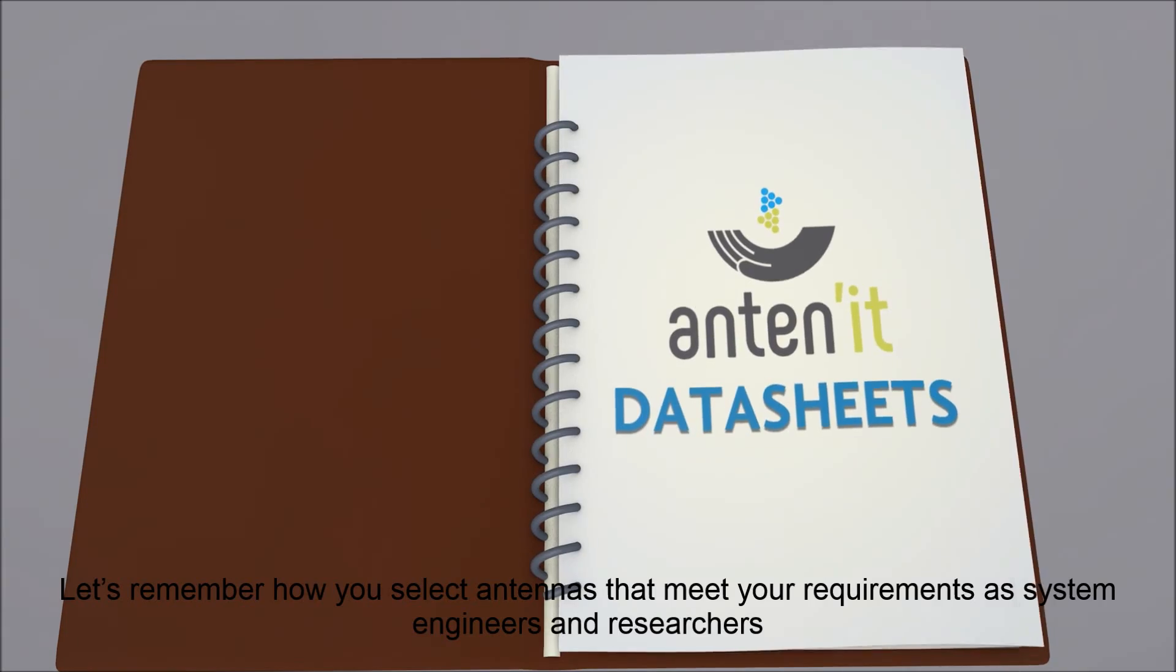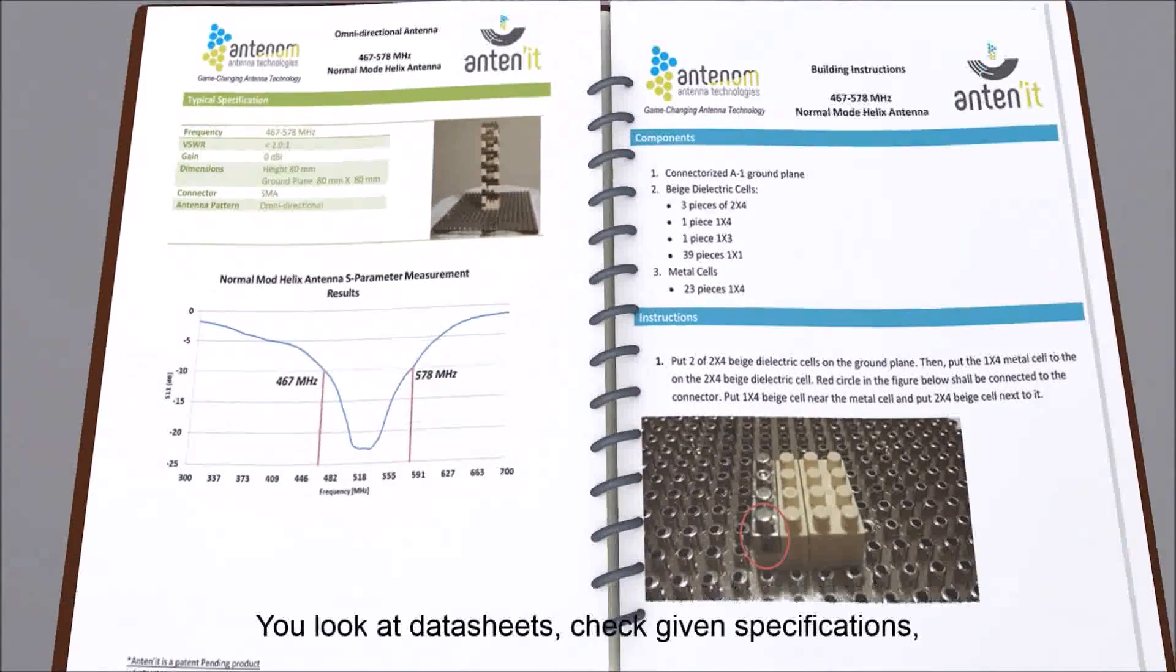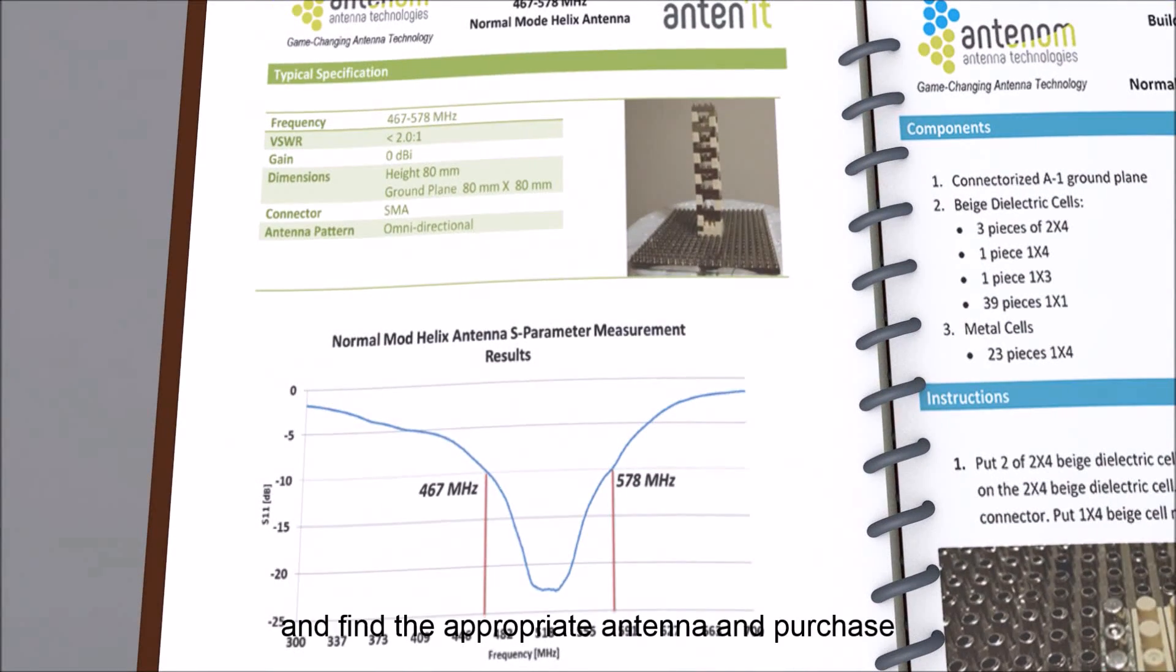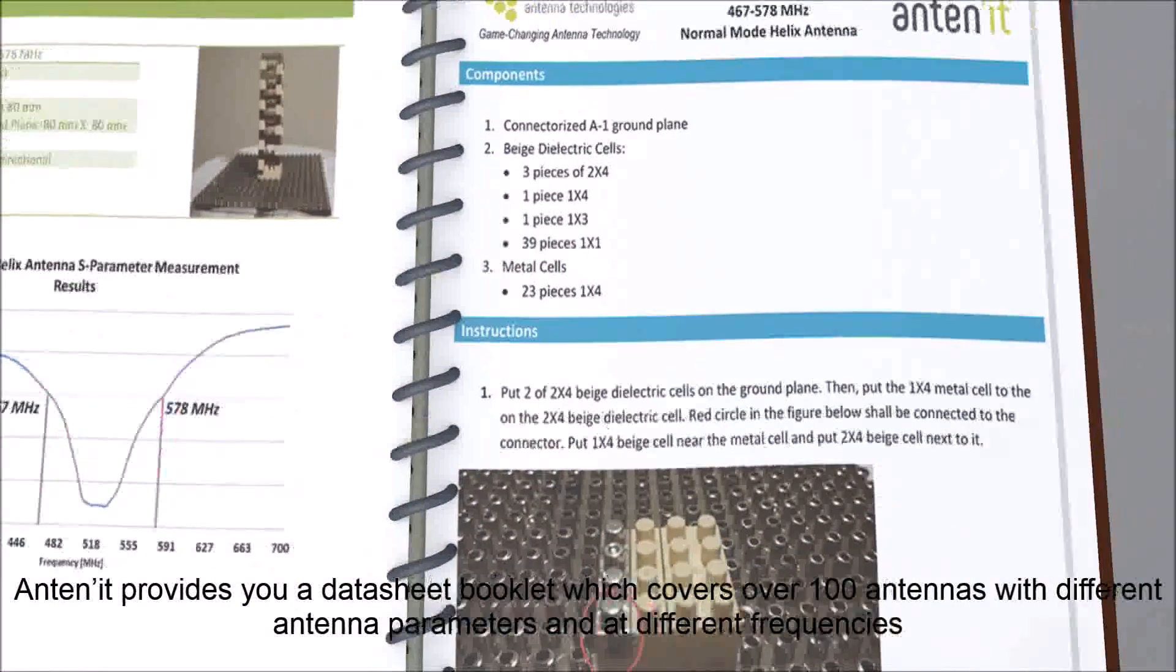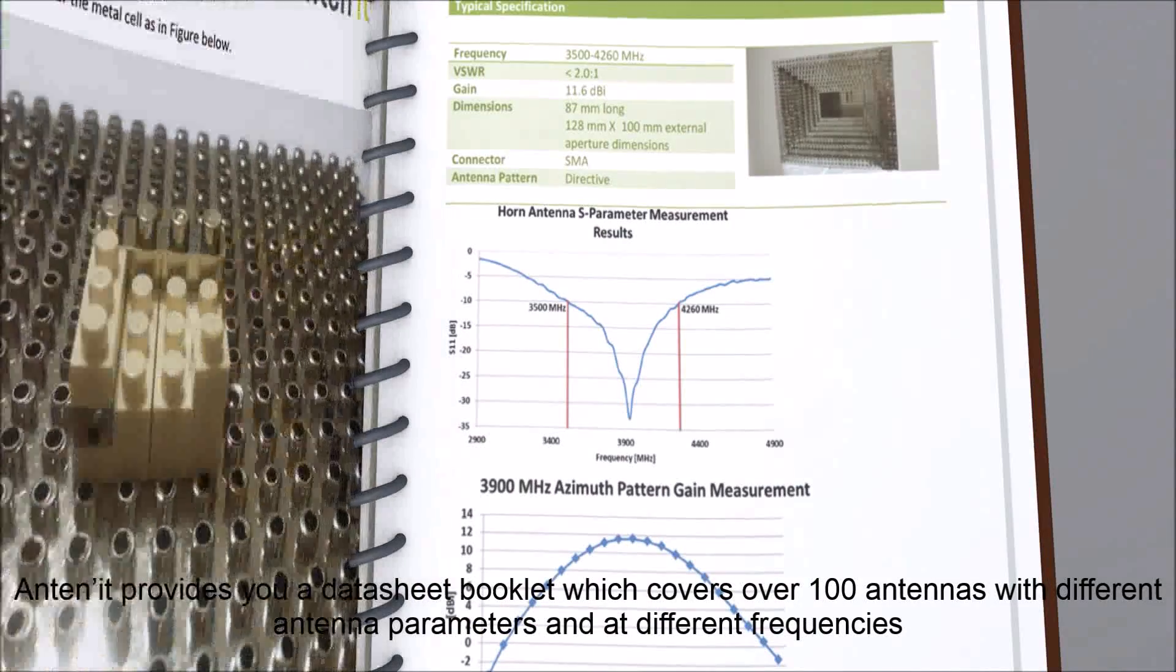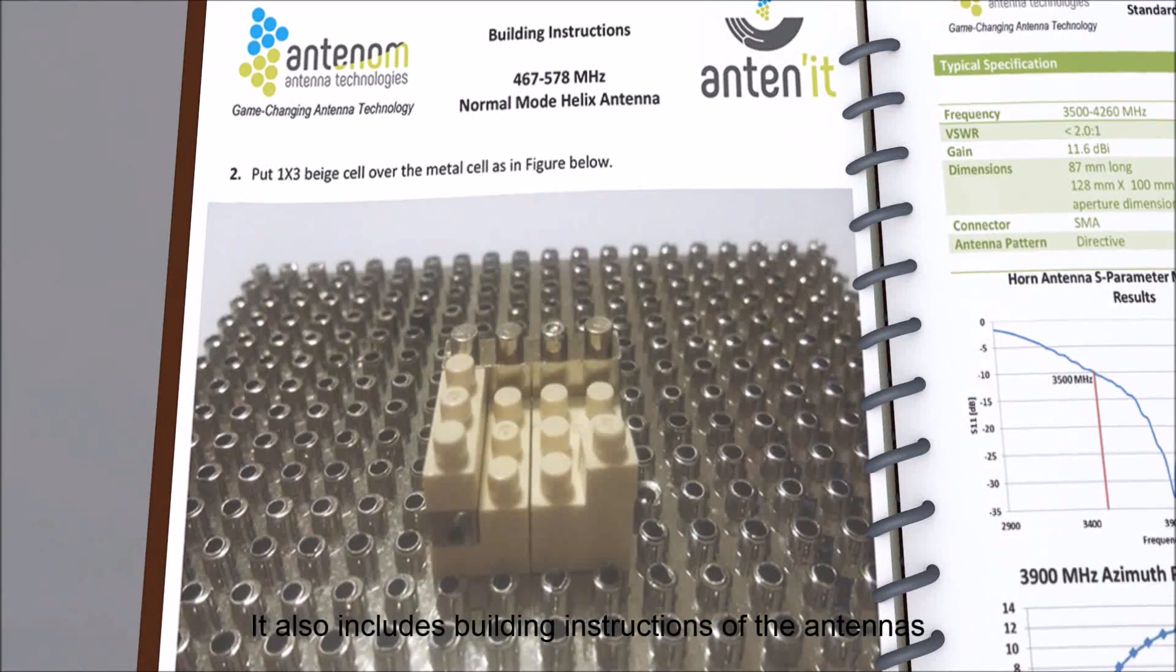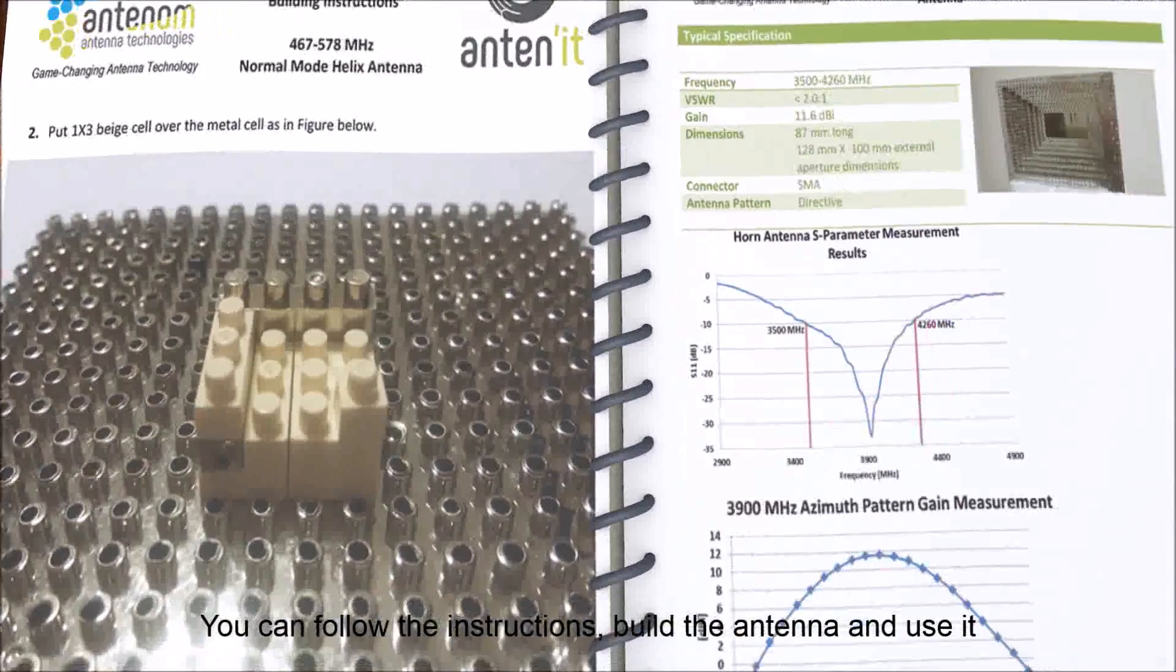Let's remember how you select antennas that meet your requirements as system engineers and researchers. You look at data sheets, check given specifications, and find the appropriate antenna and purchase. Antennate provides you a data sheet booklet which covers over 100 antennas with different antenna parameters and at different frequencies. It also includes building instructions of the antennas. You can follow the instructions, build the antenna, and use it.